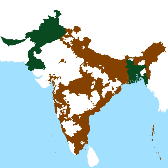The province of Bengal, constituted under the Government of India Act 1935, ceased to exist. In lieu thereof, two new provinces were to be constituted, to be known respectively as East Bengal and West Bengal. The fate of the district of Sylhet in the province of Assam was to be decided in a referendum. Similarly, the province of Punjab ceased to exist, and two new provinces were to be constituted as West Punjab and East Punjab. The boundaries of the new provinces were to be determined by the award of a boundary commission appointed by the Governor-General.